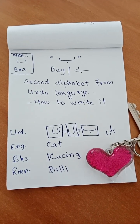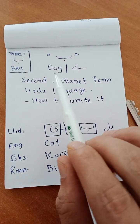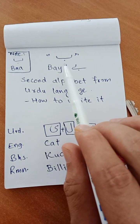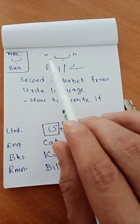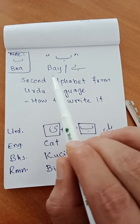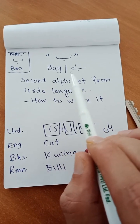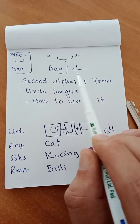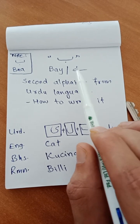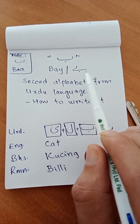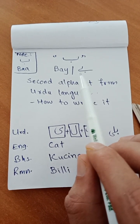This is the word Bay. We write it like this — Bay. In Roman we say Bay, and in Urdu we write Bay. This is called Bay.